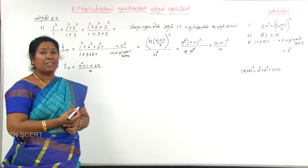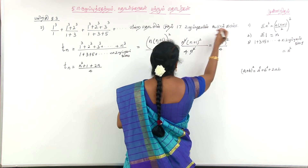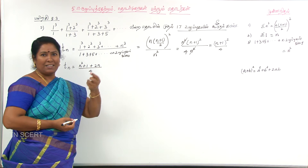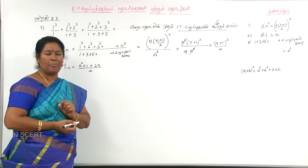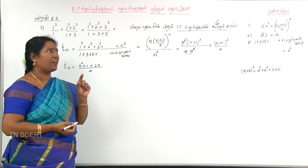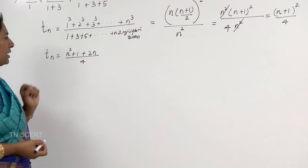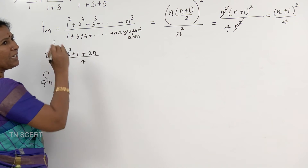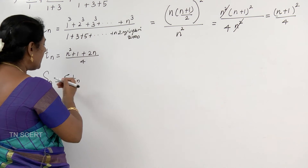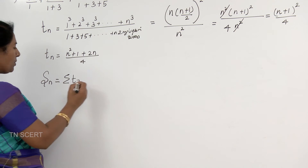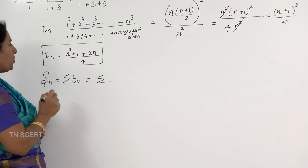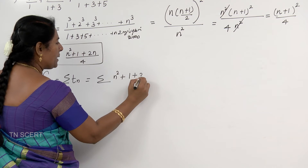Now this is tn. We are not reading all of our tn's — we are reading all of our Sn. We are reading all of Sn's formula. In your class you can learn that 1 plus 2 plus... That's why you learn that formula. In general the formula is sigma tn. That's why t1, t2, t3, etc. Sn equals sigma tn. Sigma n square plus 1 plus 2n by 4.